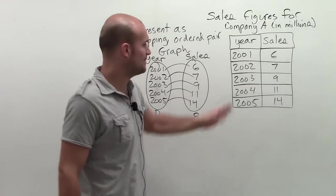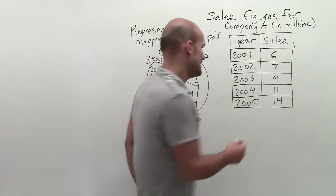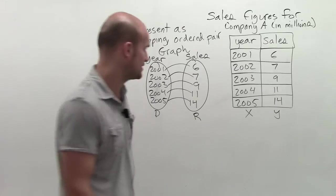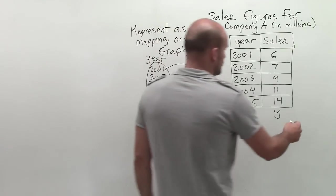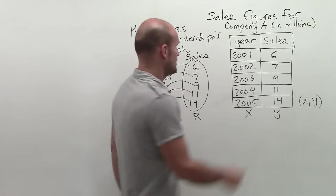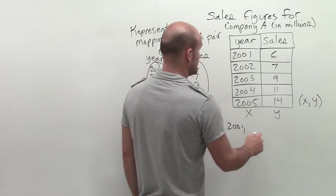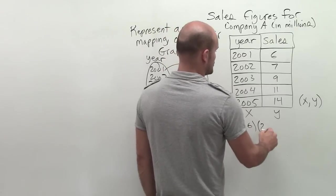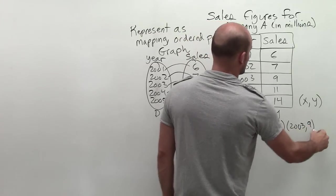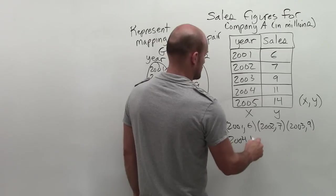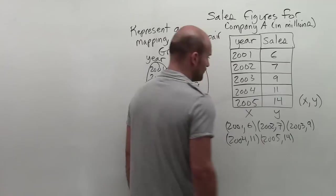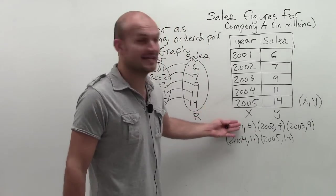Ordered pairs, remember here's your domain, here's your range, right? Domain we like to represent with our x-coordinates, and our range we're going to represent with our y-coordinates. So if I wanted to write this as ordered pairs, remember ordered pairs come in the form of x comma y, your x-coordinate, then your y-coordinate. So all I'm going to do is say 2001 comma 6, then 2002 comma 7, 2003 comma 9, 2004 comma 11, and 2005 comma 14. So that is how I would represent this relation as ordered pairs.